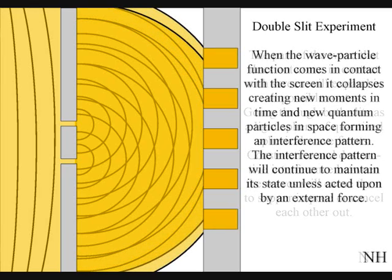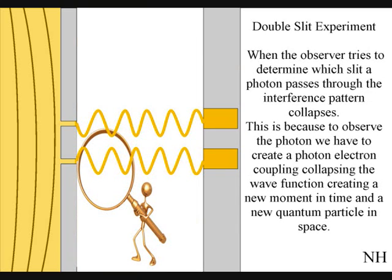When the observer turns on a detector to determine which slit a photon passes through, the interference pattern collapses. At that moment in time, the interference pattern disappears.